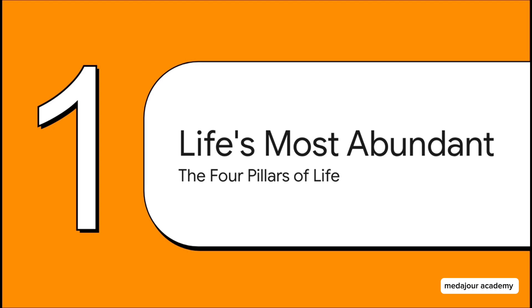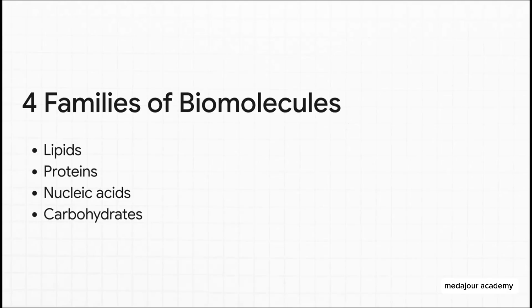Let's figure out where carbohydrates fit into the grand scheme of things. All living matter — everything from a giant redwood tree to the cells in your own body — is built from just four main families of biomolecules. First, you've got lipids, fats. Then there are proteins, basically the body's tiny machines. You have nucleic acids, like DNA and RNA, that carry our genetic code. And finally, the star of our show: carbohydrates — one of the four essential pillars of life.